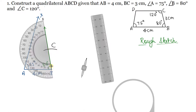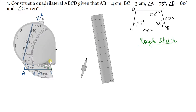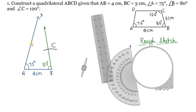At point C, we need to make a 120 degree angle. We will keep track of the line segment CB and draw the angle in the outward direction, using the lower scale. We mark 120 degrees, draw a ray in that direction — this ray will intersect the ray from A at one point, and that point is D.